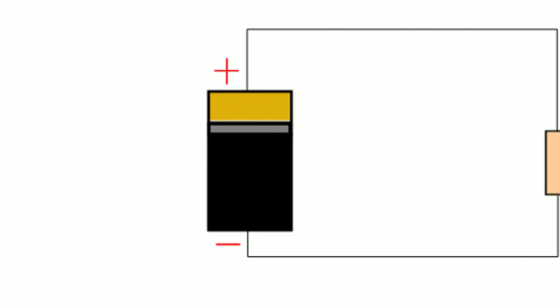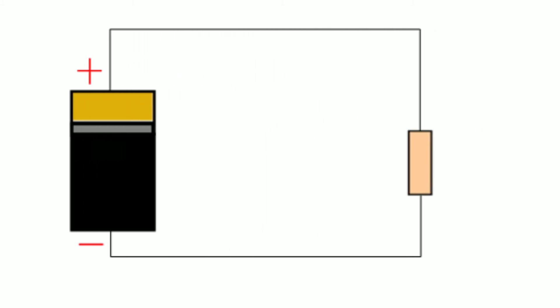Let's look at an example to show how easy this is to use. Let's go back to our simple circuit. Let's say we have a 12 volt battery and we connect with some wire a 250 ohm resistor across this battery. It's worth mentioning that our connecting wire will have a small resistance value also, but for this example we will treat the total resistance as 250 ohms.